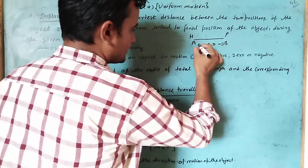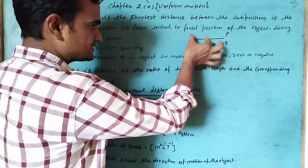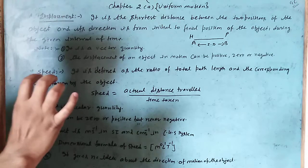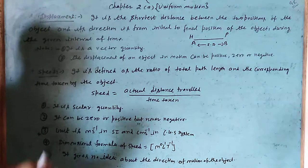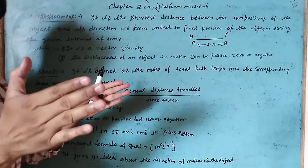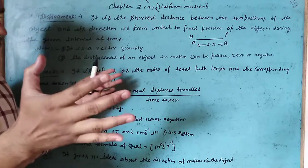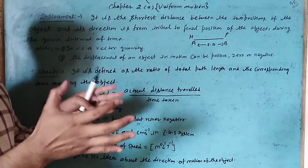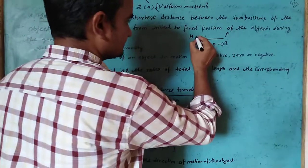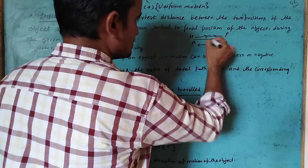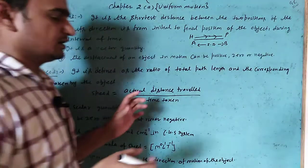Displacement is the shortest distance between the two positions of the object. The object has two positions, and the shortest distance between those two positions is called displacement. Its direction is from the initial position to the final position of the object during a given interval of time.